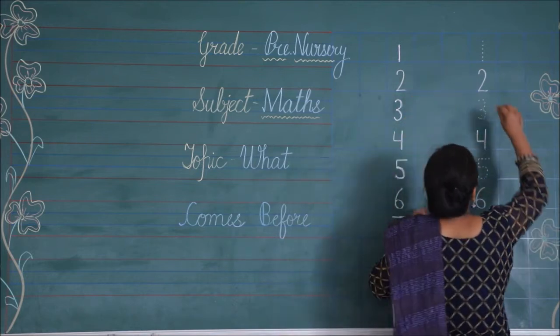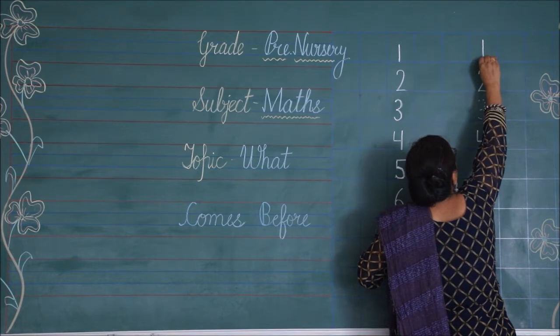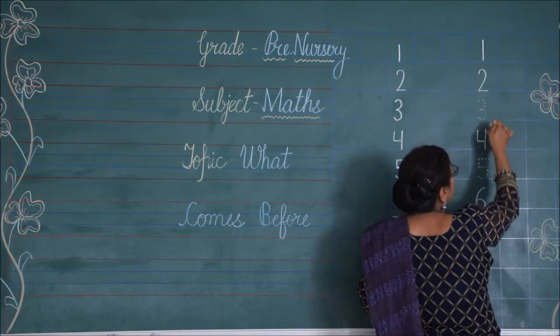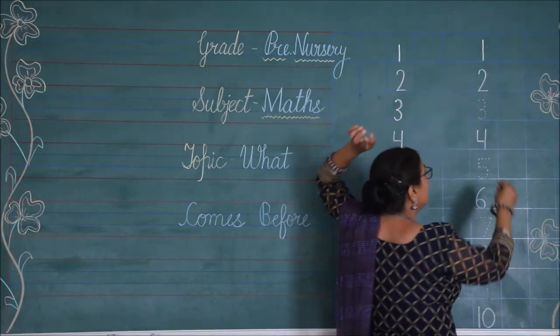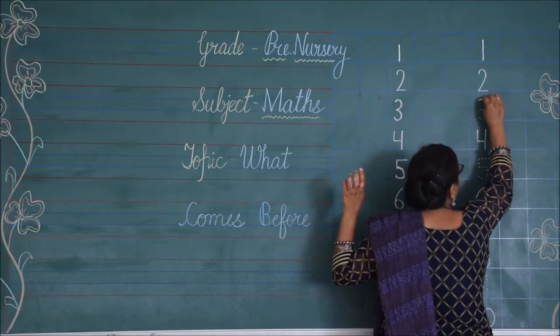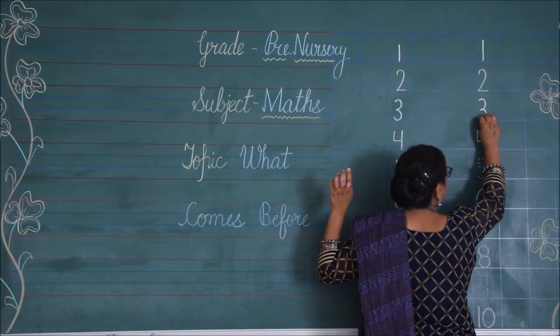So, 2 ke upar bhi kaun sa number? 1. So, you have to join the dots for number 1. This is number 1. Now, which number is after 4 ke upar kaun sa number? 3. So, 3 is before 4. So, write 3 on the line in the book.